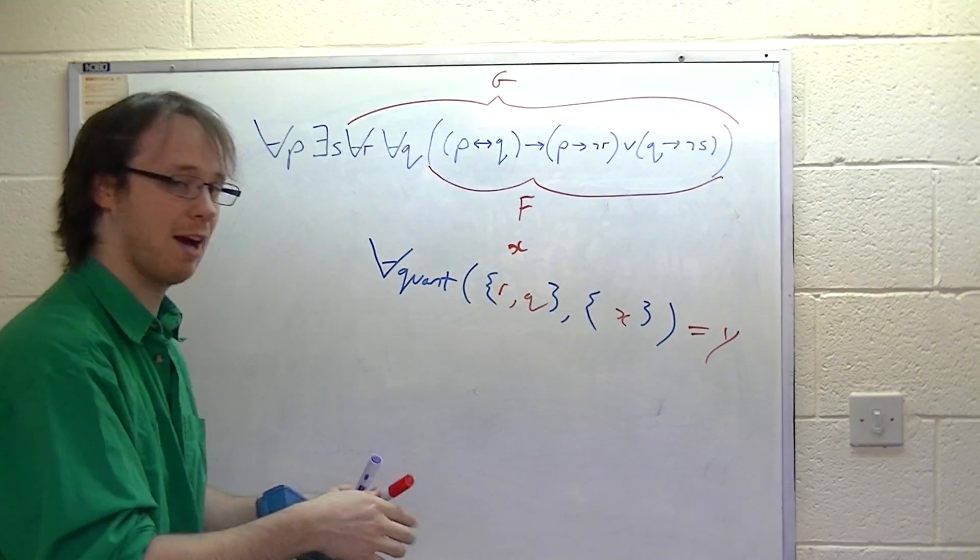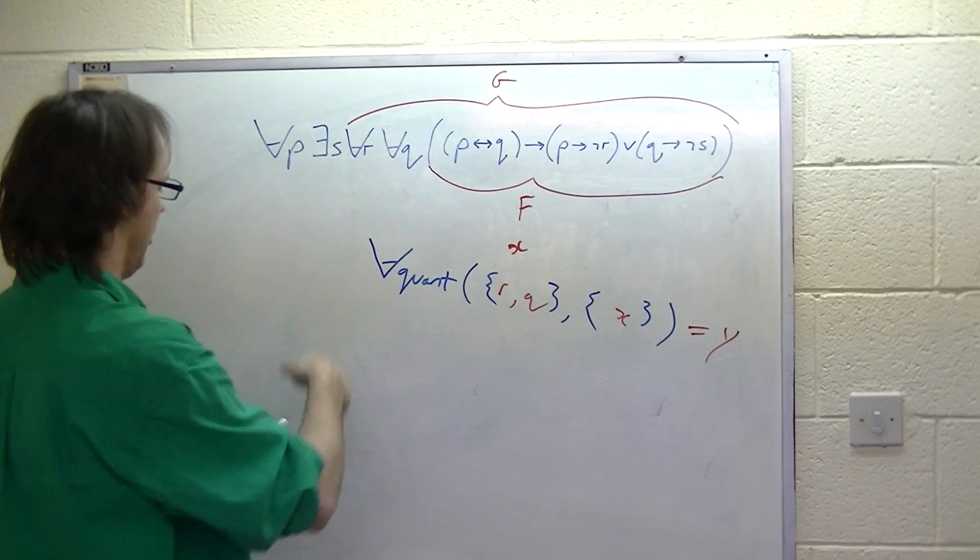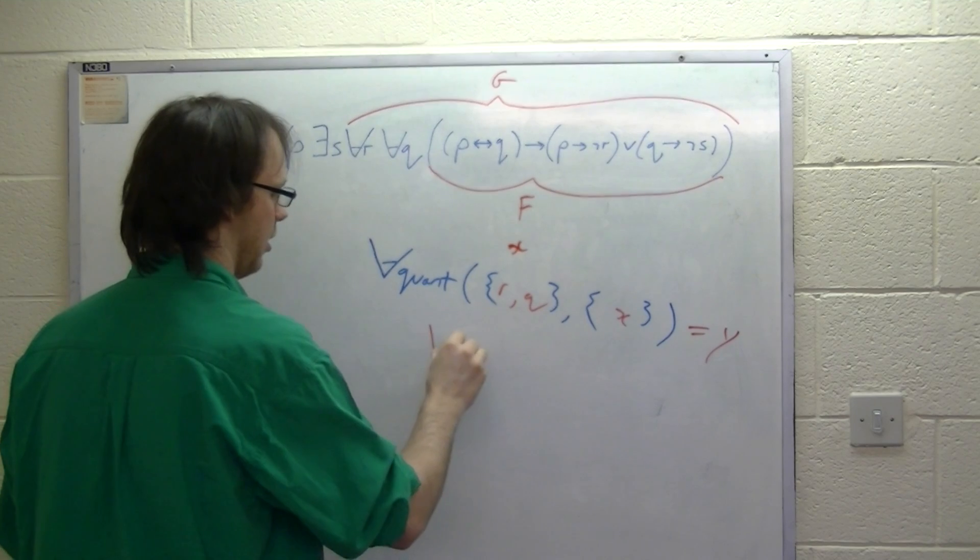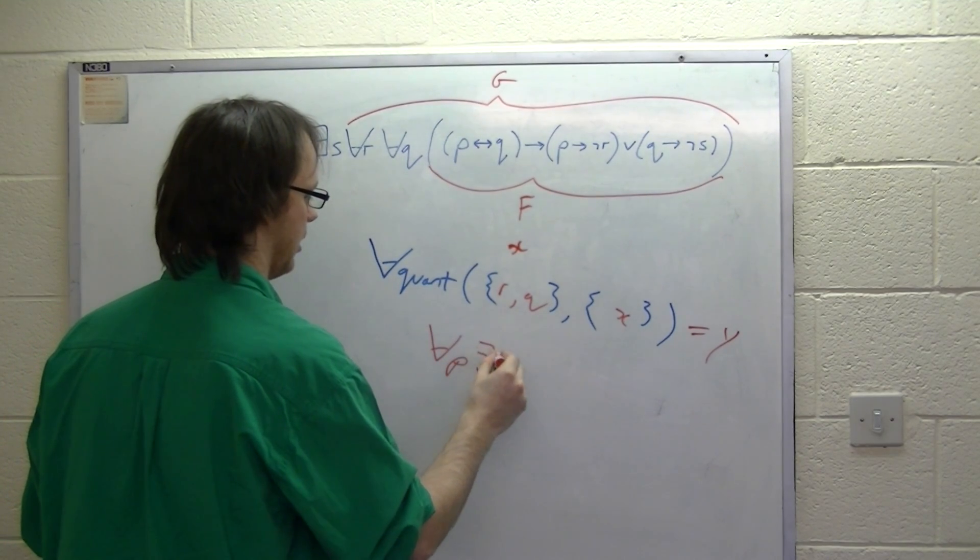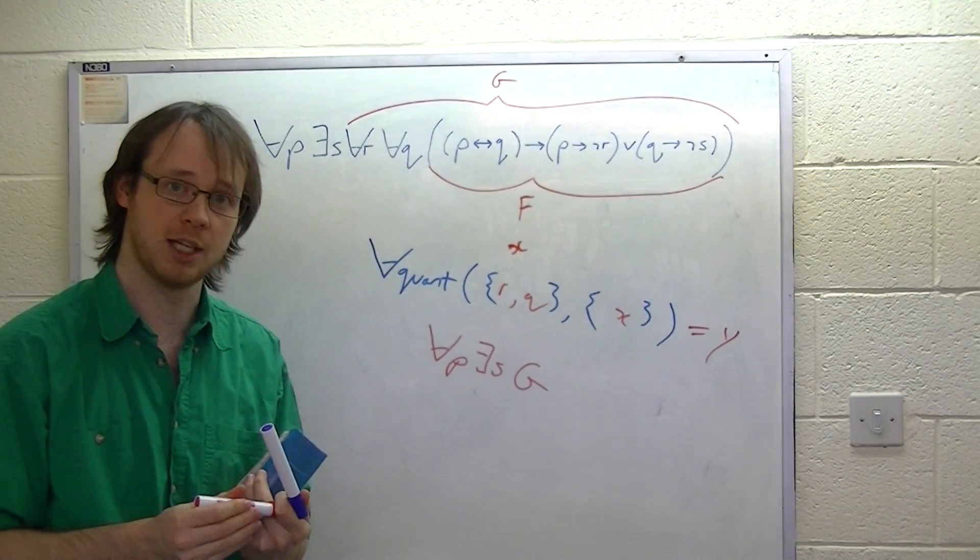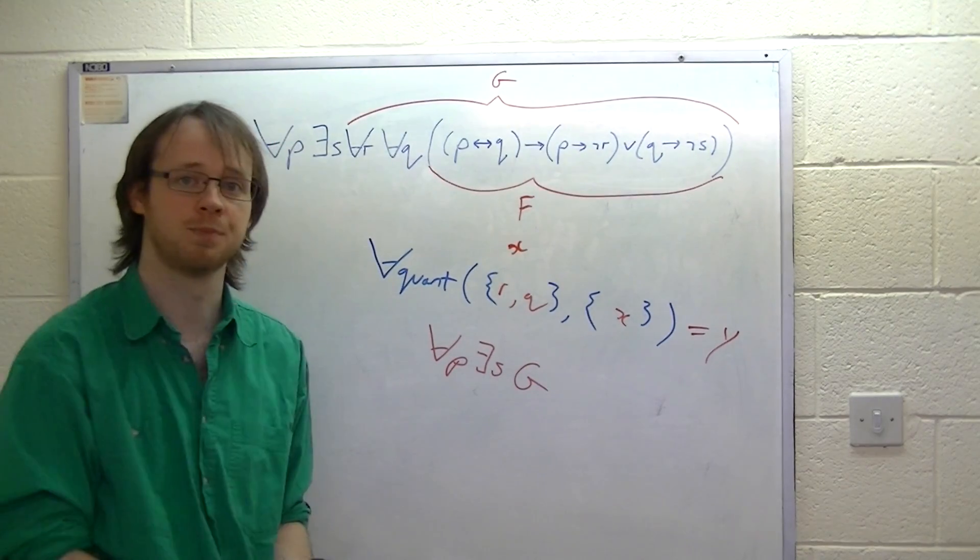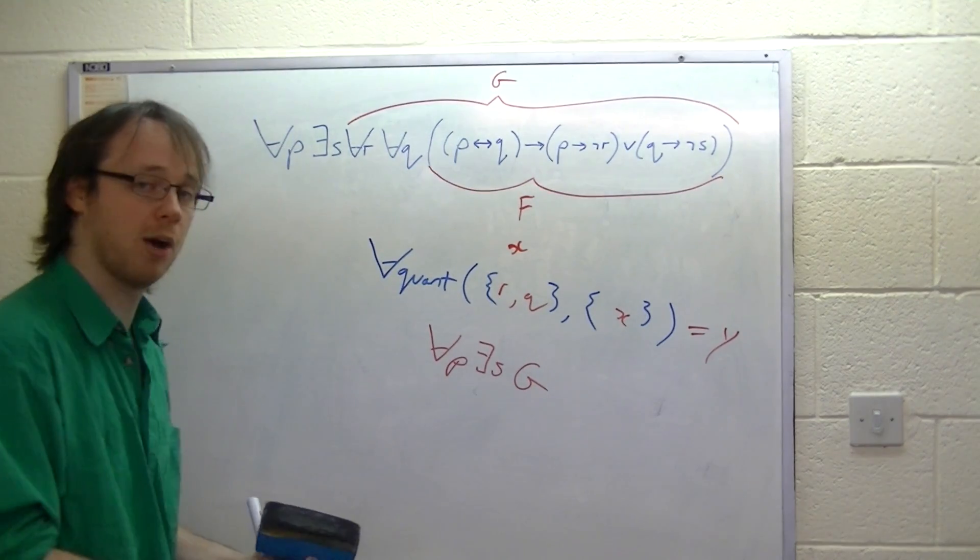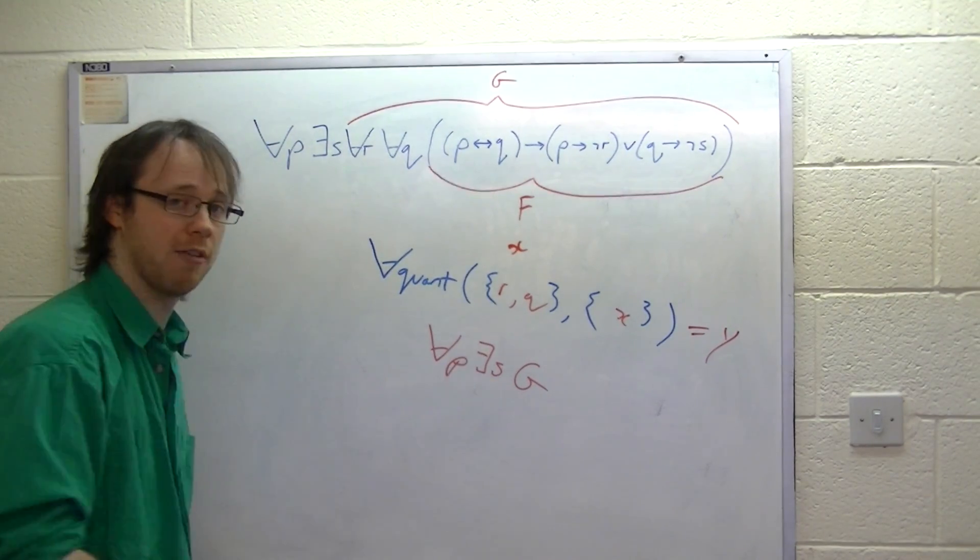Well, we've now reduced our formula into something which looks like this: for-all P, exist S, G, where G is represented by node Y. So, we can effectively start again. So, now, the next quantifier in is exists.